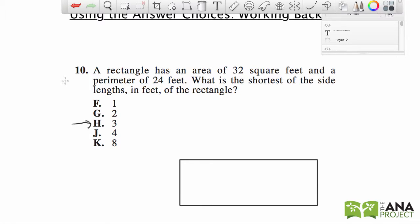So let's read the problem. A rectangle has an area of 32 square feet, so I'm going to write area is 32 and the perimeter is 24. What is the shortest of the side lengths in feet of the rectangle?